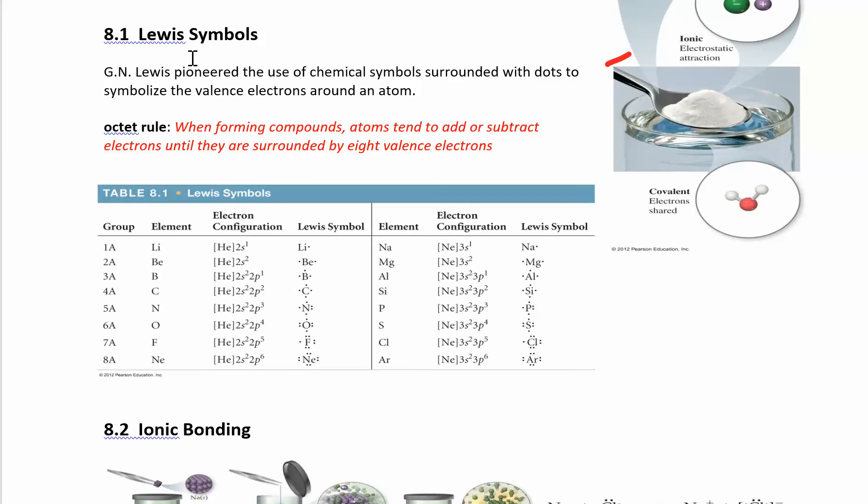To represent the Lewis structure, you take the element symbol and add however many valence electrons you have. Lithium's in group one, it has one dot to represent one valence electron. Beryllium has two, boron has three, carbon has four, and so on. Each one of those little dots represents an electron.